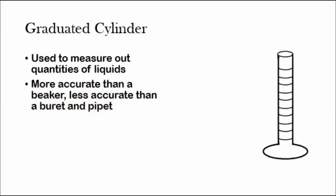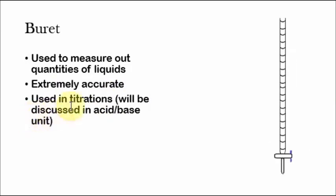So a burette is used to measure out quantities of liquids. Basically how it works is you just put the liquid on the top here, and then there's this little spout in which you open in order to release the liquid down the spout. They're used in titrations, they're very accurate, and we'll be discussing that in the acid-base unit.